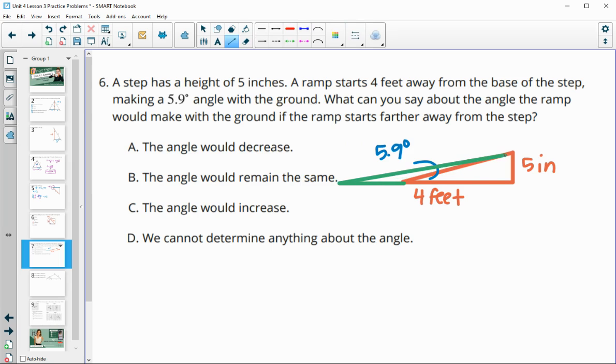So that angle is going to get shorter if the step stays that same height. And we just keep pulling the ramp further and further away. Then the angle would decrease in size.